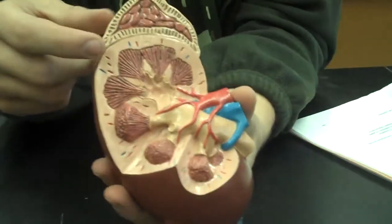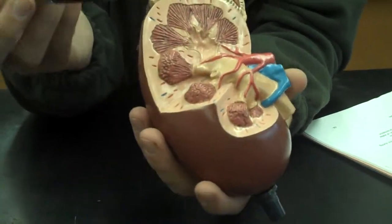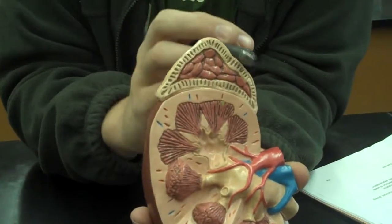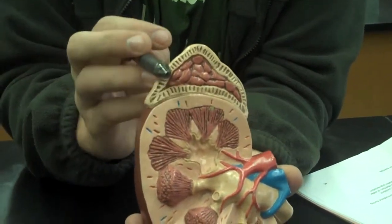And the final thing for the endocrine system is the adrenal gland. Adrenal is on top of the kidney. You can tell by the root word renal. That's in the kidney.